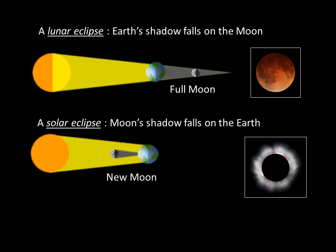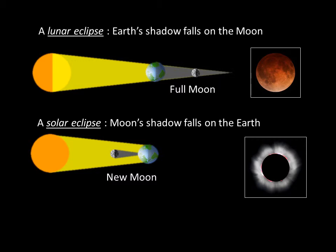During a solar eclipse, the Moon's shadow falls on Earth. The Moon's shadow is tiny, so it can cover only a small portion of Earth at any moment. Therefore, to see a solar eclipse, you have to be within the relatively small pathway through which the shadow of the Moon moves. These figures make it look like we should see an eclipse every full Moon and every new Moon — we don't, so what's going on?